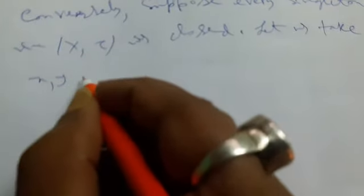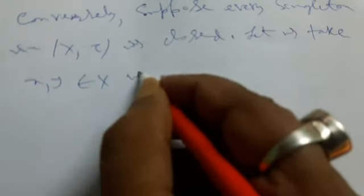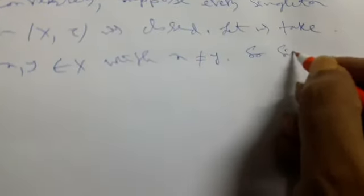Let us take x, y belongs to X with x not equals to y. So singleton {x} is closed.